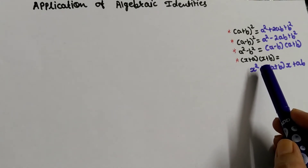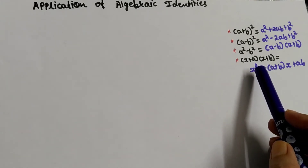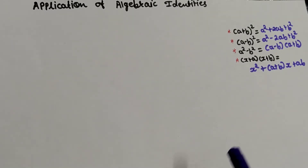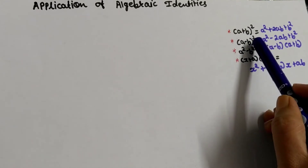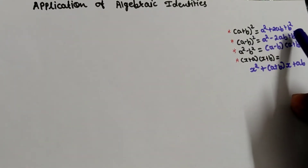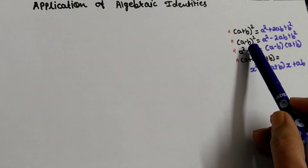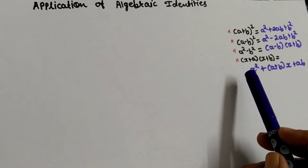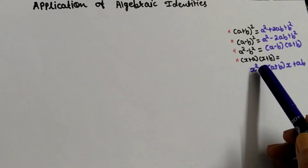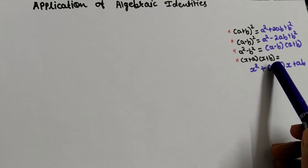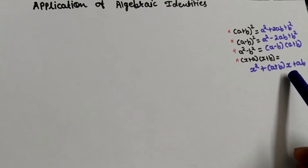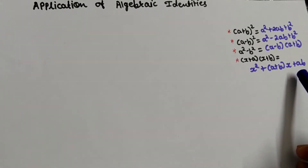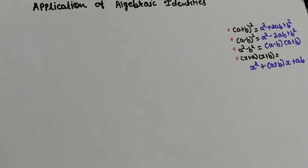First we need to learn about these identities. The first identity says that (a + b)² is equal to a² + 2ab + b². The second identity says that (a - b)² is equal to a² - 2ab + b². The third identity says that a² - b² is equal to (a - b)(a + b). The fourth identity says that (x + a)(x + b) is equal to x² + (a + b)x + ab.